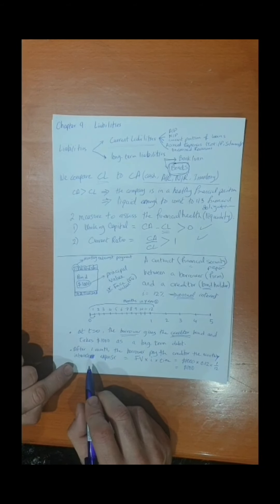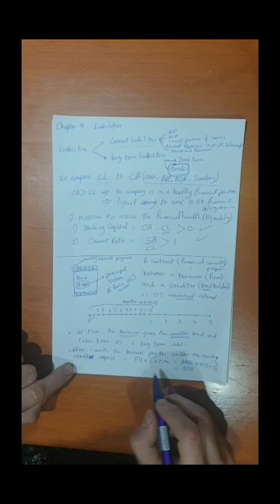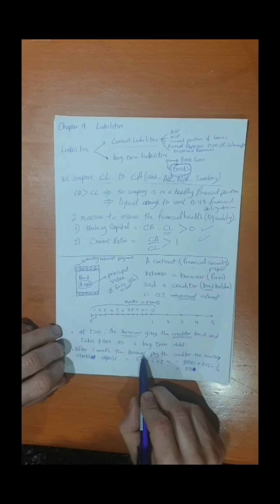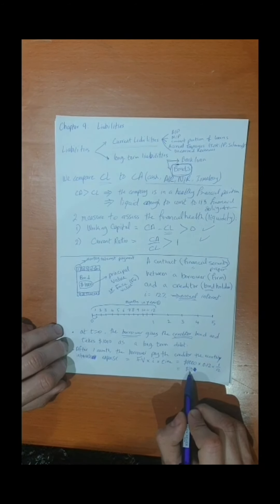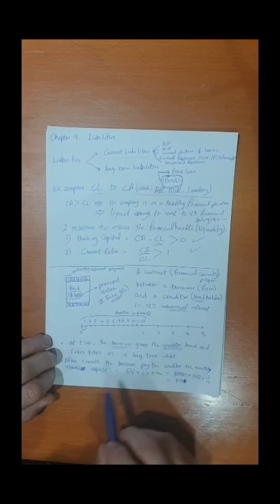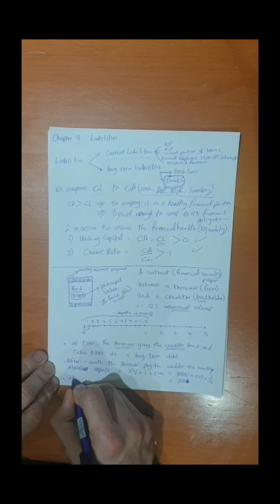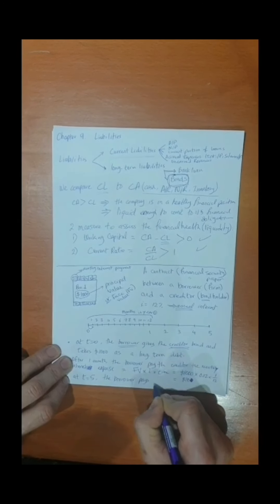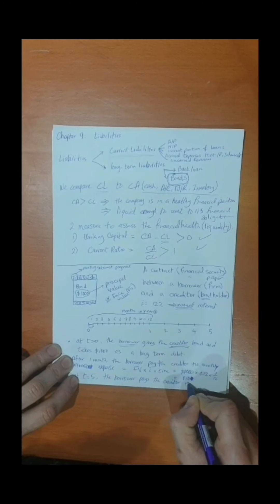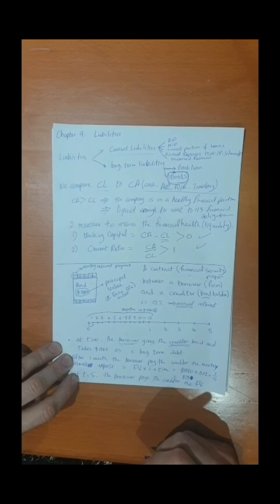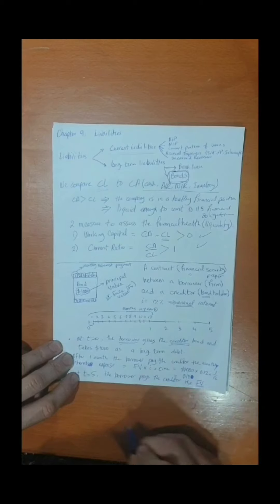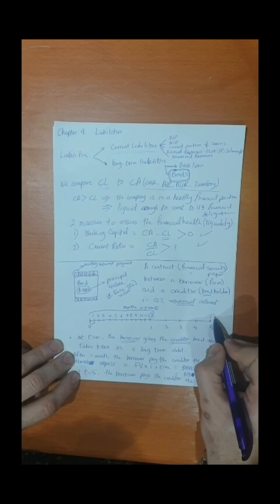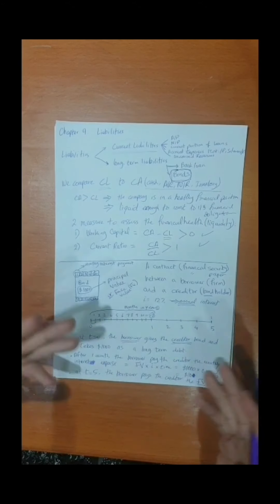At the end of each month the borrower pays the creditor $10 as interest expense. This continues for all five years. At the end of the fifth year, the borrower pays the creditor the face value and takes the bond back, along with the final interest payment for the 12th month. That is the concept of bonds — simply a loan with specific terms for interest payments and repayment of the principal value.